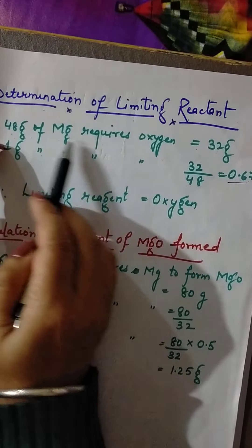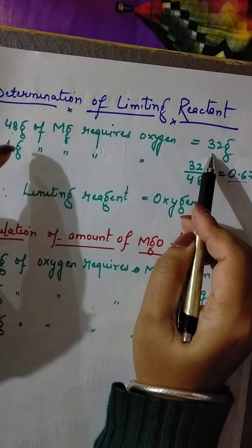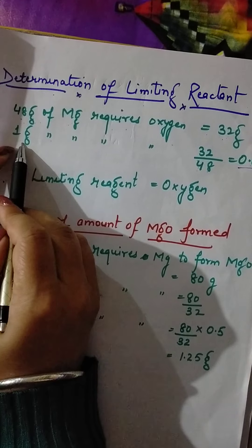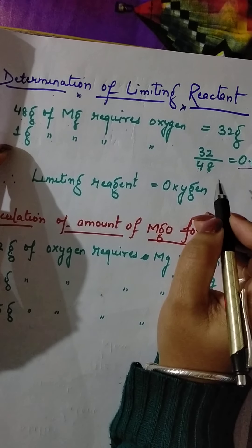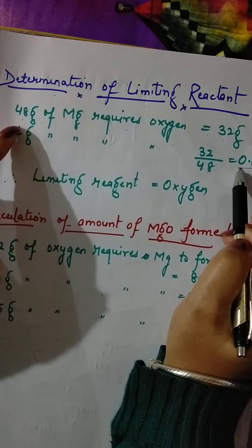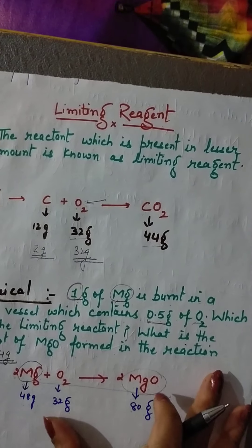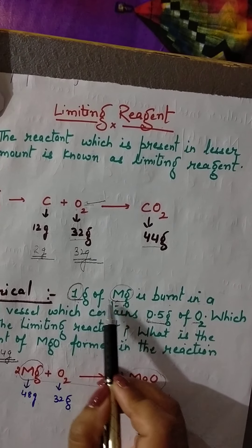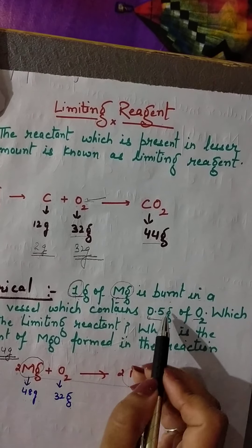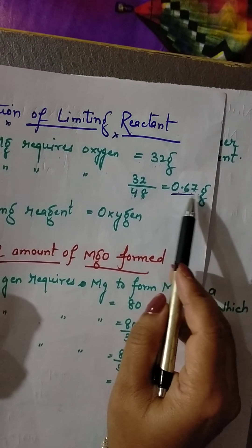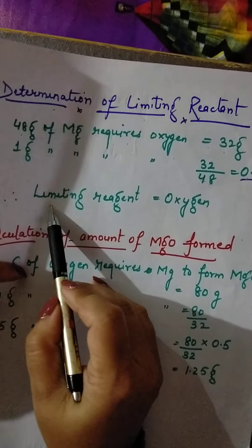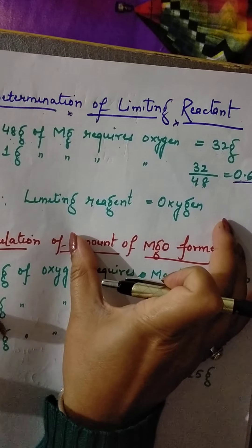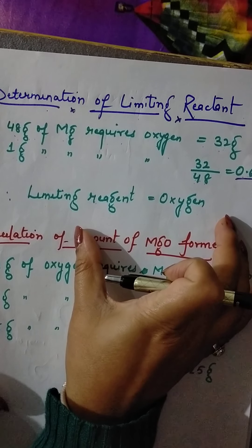For 48 grams of magnesium we need 32 grams of oxygen — we know this from the balanced chemical equation. But there is only 1 gram of magnesium, so using the mathematical method: 32 by 48 = 0.67 grams of oxygen required. But how much oxygen was actually supplied? Only 0.5 grams. I need 0.67 but only have 0.5 — a smaller amount. So which is the limiting reagent? Oxygen.